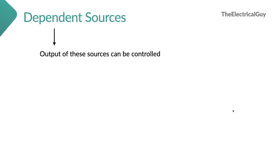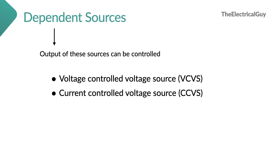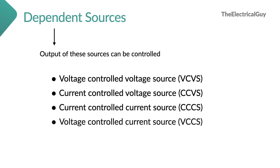The voltage source that depends upon the input voltage is called a voltage controlled voltage source, or VCVS. Similarly, there will be some voltage source which can be controlled by the input current, and hence the name is current controlled voltage source, CCVS. Similarly, in case of current sources, there is a current controlled current source and a voltage controlled current source. These are all the types of dependent sources.